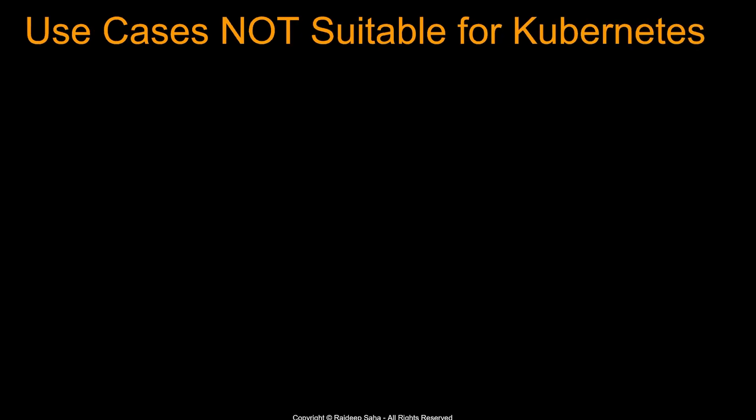Let's go over some use cases where Kubernetes is not suitable and there are better alternatives. The first is event-driven architecture. With event-driven workloads, you should use serverless options as well as other open-source options. For example, SQS, EventBridge, and SNS are AWS-native solutions. If you prefer open source, you can use Amazon MQ or managed Kafka. These still give you more power with less management overhead for your event-driven architecture.